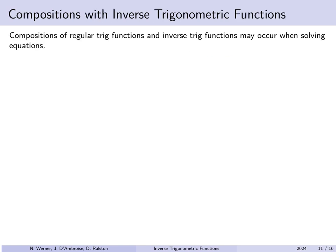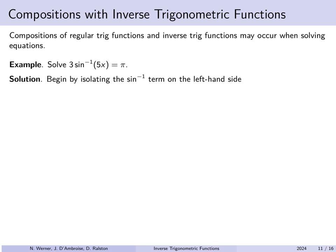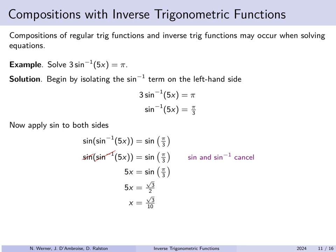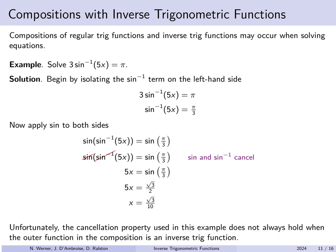Now what happens if we start composing functions with inverse trig functions? Let's solve 3 times the arcsine of 5x equals pi. Dividing both sides by 3, we get arcsine of 5x equals pi over 3. Now take the sine of both sides — the sine and arcsine cancel — giving 5x equals sine of pi over 3. Dividing by 5, x equals sine(pi/3) over 5, which evaluates to root 3 over 10.